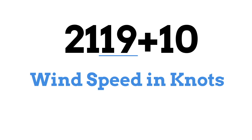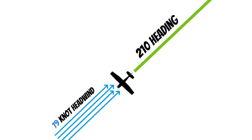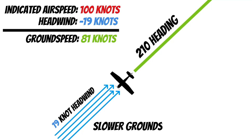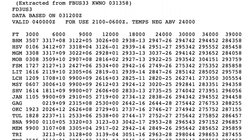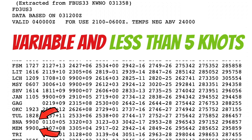Our wind speed at 6,000 feet MSL is 210 at 19 knots. This is really important to know when you're planning a cross-country flight, because if I'm traveling on a heading of 210 and my indicated airspeed is 100 knots, my speed over the ground is now only 81 knots — that's our ground speed. If my ground speed is slower, it will take me longer to get to my destination, and we need to know how long it takes so we don't run out of fuel. Occasionally, you might see the wind data shown with 9900, like we do here at KBNA and Memphis — this just lets you know that the wind at this altitude is variable and less than 5 knots.